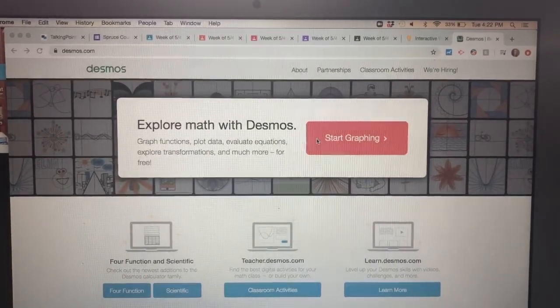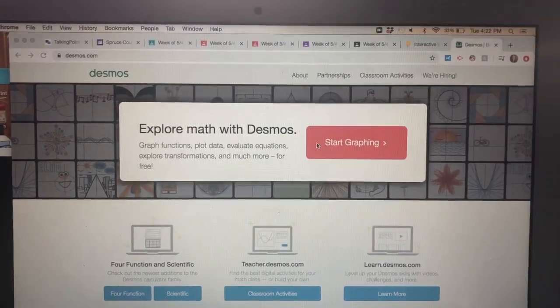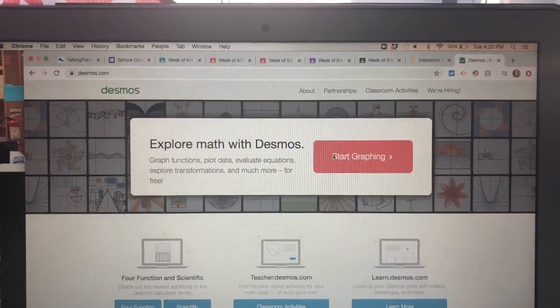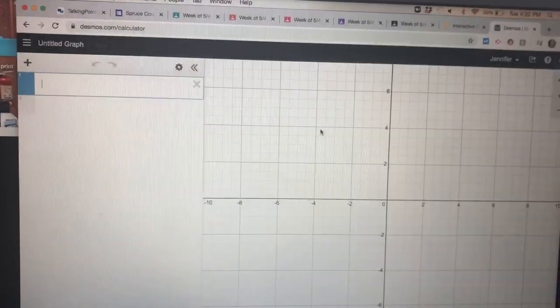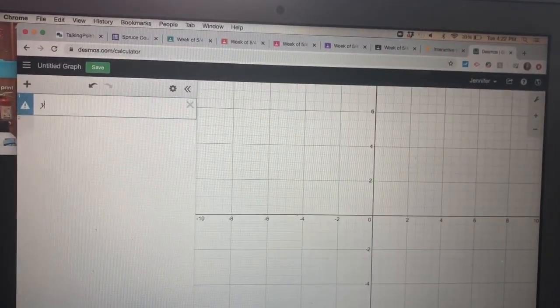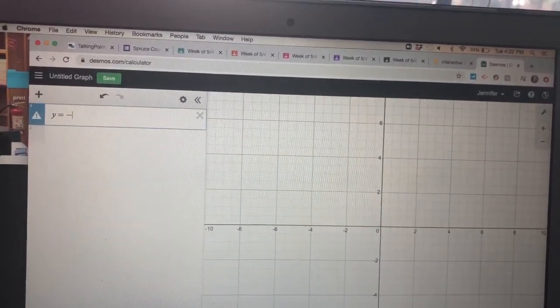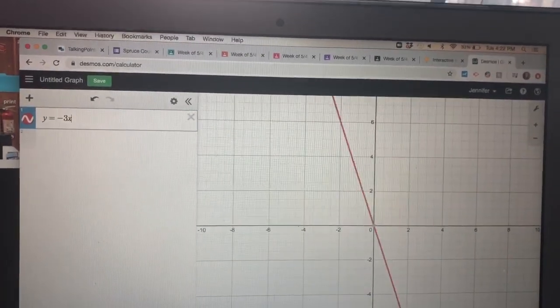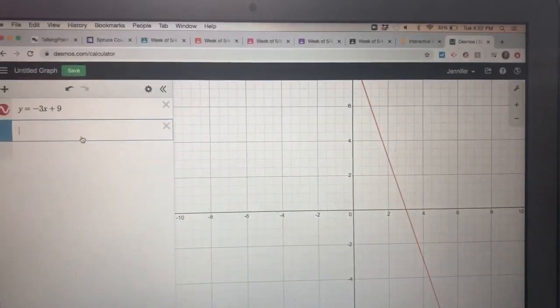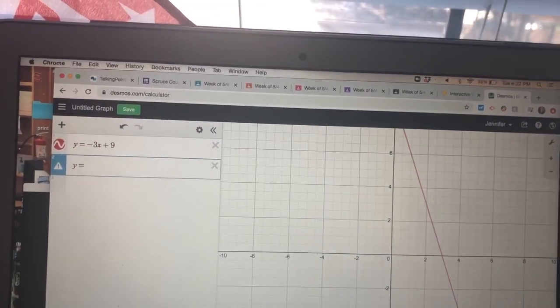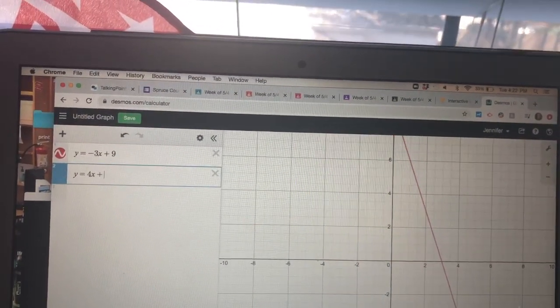Okay to check you're going to go to desmos.com, D-E-S-M-O-S dot com and hit start graphing. Okay so we're going to take our two equations. So the first equation we had was y equals negative 3x plus 9. Y equals, oh hello, negative 3x plus 9. Okay that's that red line right there. The next equation we had was y equals 4x plus 2.